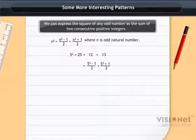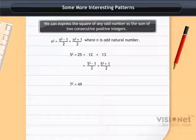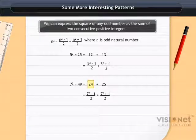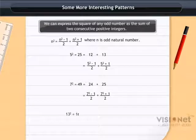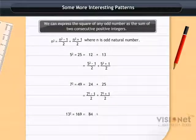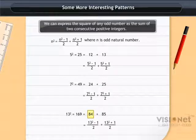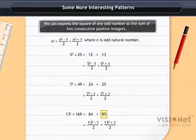Similarly, we can express 7 squared — that is 49 — as (7 squared minus 1) upon 2 plus (7 squared plus 1) upon 2. Again, 13 squared is 169, which can be expressed as (13 squared minus 1) upon 2 plus (13 squared plus 1) upon 2.